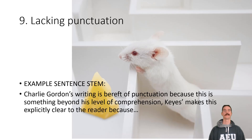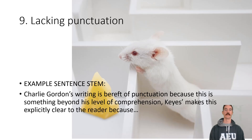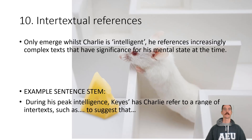This is the least impressive-sounding one, but it's lacking punctuation. Charlie Gordon's writing is bereft — completely absent — of punctuation, because it is something beyond his level of comprehension. Your task is to finish: 'Keyes makes this explicitly clear to the reader because...'